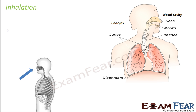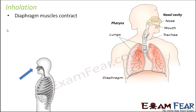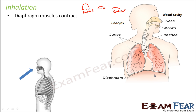During inhalation, we need more space inside the lungs to accommodate the air we take in. The diaphragm needs to go down. The diaphragm is dome-shaped, and when the diaphragm muscles contract, this dome-shaped structure goes down. When it goes down, the lungs get a lot of space. The thoracic cavity expands, because the diaphragm marks the end of the thoracic cavity. So when the diaphragm goes down, the thoracic cavity volume increases, and the lungs expand.